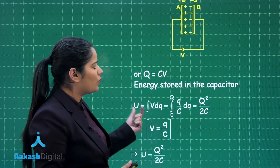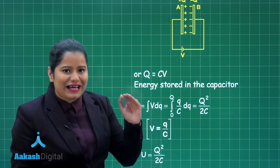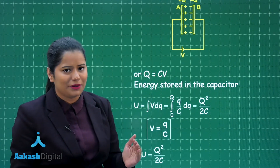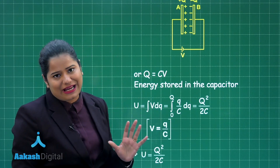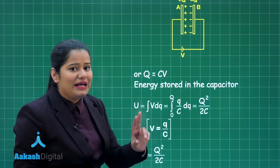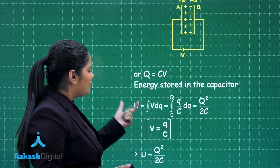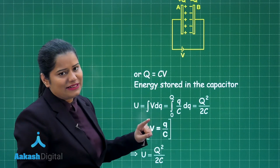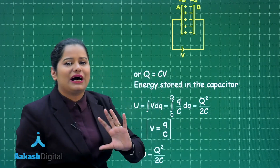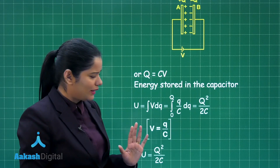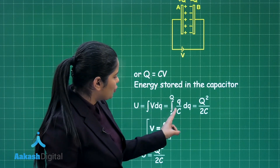What is going to be the total energy? Let us suppose DQ is the charge that is transferred from one plate to the other. What is going to be the small amount of work done in that case? That will simply be equal to V·DQ. To calculate the total work done, which will be equal to the energy stored in the capacitor, you need to integrate this from the limits 0 to Q, because Q is the total charge transferred from one plate to the other. When you write V in terms of Q and C, that will be equal to Q by C.